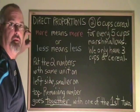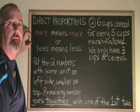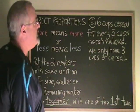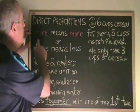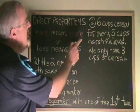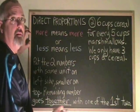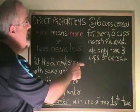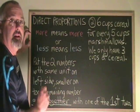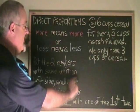In this second example, we need six cups of cereal for every five cups of marshmallows for a recipe. We only have three cups of cereal. How many cups of marshmallows do we need? Is it a more means more situation or a less means less situation? In a recipe, if you use more cereal, you're going to need more marshmallows. In this case, we have to use less cereal, so we're going to have to use less marshmallows. It's a less means less situation, which means it is a direct proportion.